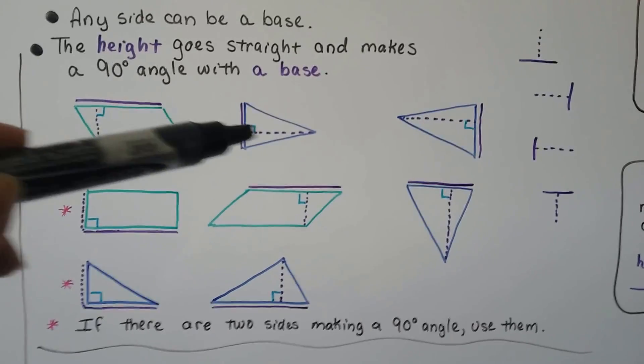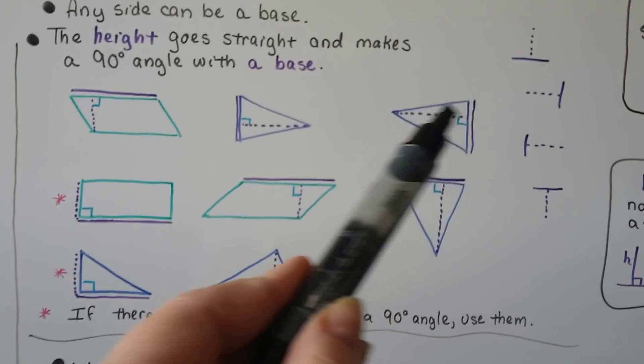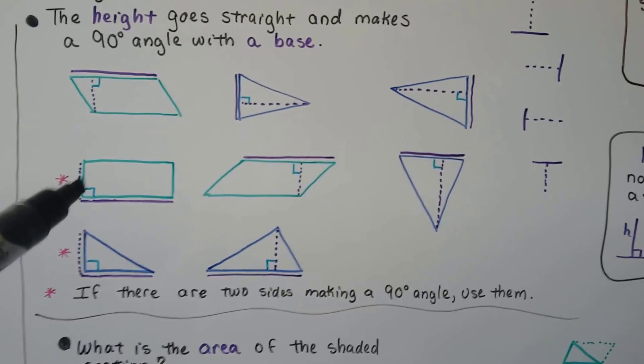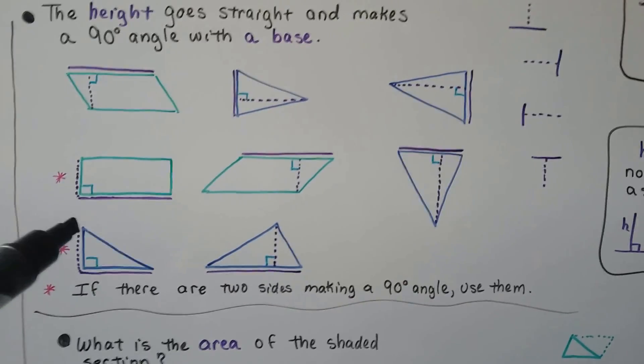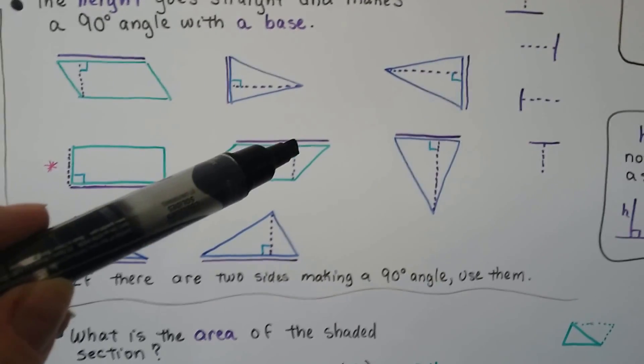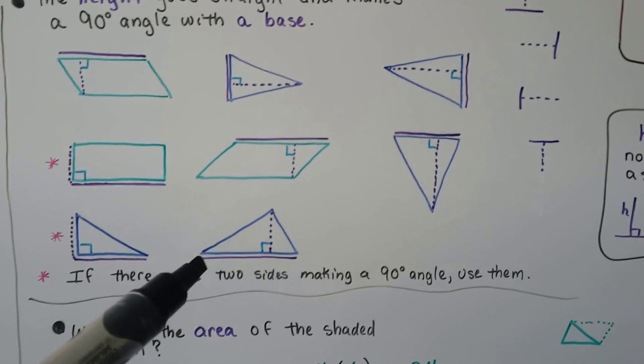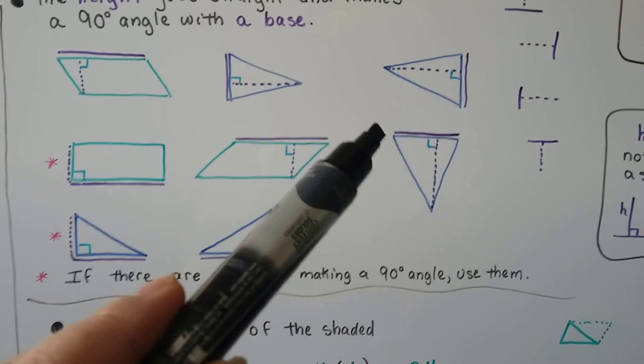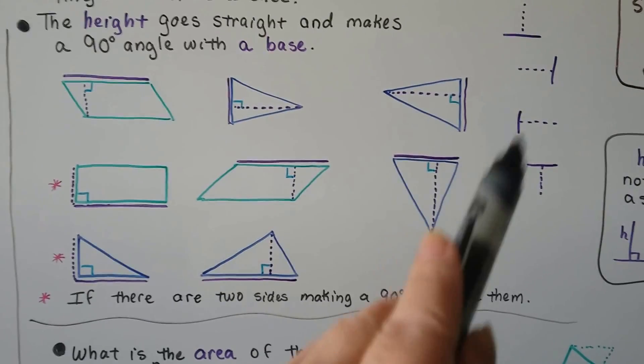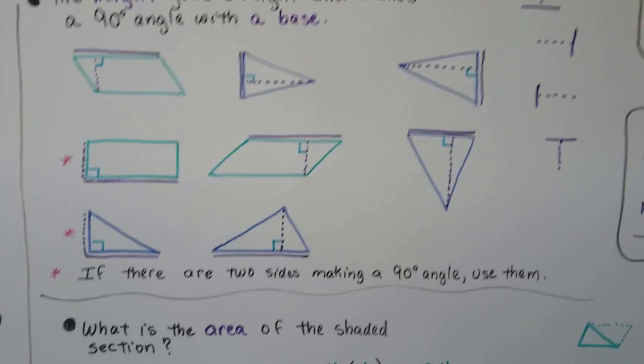Here we could have the base and then the height. If there are two sides making a 90 degree angle, we could use them as the height and the base. Here the top is being used as the base and then here's the height. Here we have the base and the height. Here we have the base up here and then the height coming down. As long as it's making a T-shape, a perpendicular line with the 90 degree angle, we can use it.